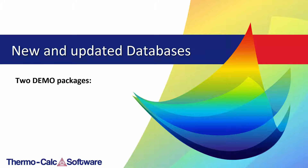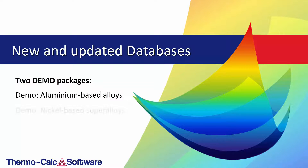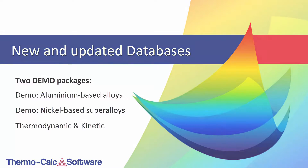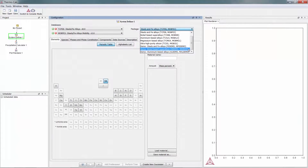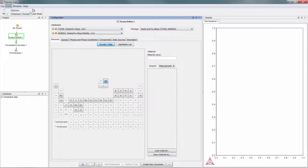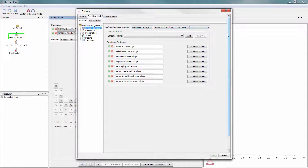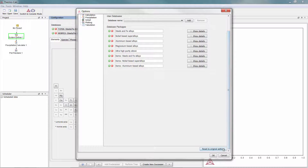Two free demo database packages have also been added to every installation to accommodate the precipitation module examples. These database packages — demo aluminum-based alloys and demo nickel-based super alloys — include both a thermodynamic and a kinetic database. If you do not see the packages in the drop-down menu after updating your software, go to Tools, Options, and Graphical Mode, then scroll to the bottom and click Reset to Original Settings.